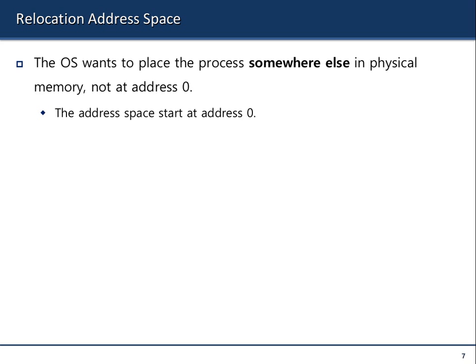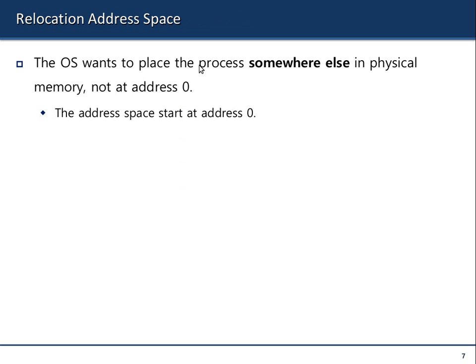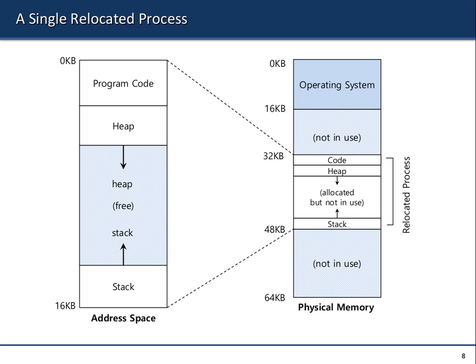The operating system does not do that directly — there is no direct one-to-one mapping between the virtual address and the physical address. There is usually a relocation. The OS wants to place the process somewhere in physical memory, not necessarily at address 0, but the process will still believe that it is accessing memory starting from address 0, because it views its virtual address space that way. The virtual address space of the process is usually smaller compared to the actual size of the physical memory. For example, the actual size of the physical memory is 64 kilobytes, whereas the address space for the process is only 16 kilobytes, so it fits nicely within the physical memory.